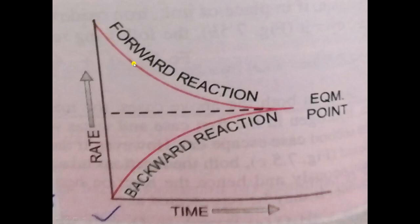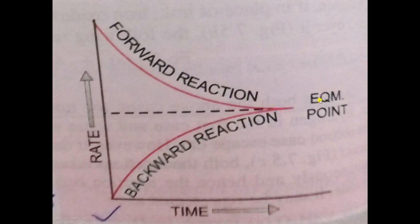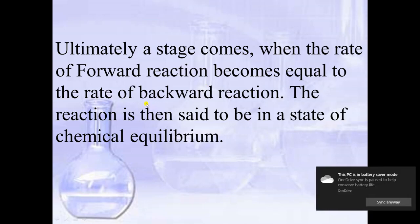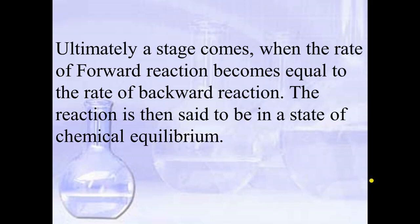The rate of the forward reaction decreases, giving a decreasing curve. For the backward reaction, concentration is increasing, so it gives an increasing curve. These two curves meet at the equilibrium point. A stage comes when the rate of the forward reaction becomes equal to the rate of the backward reaction — at that stage, we say the reaction is in chemical equilibrium.